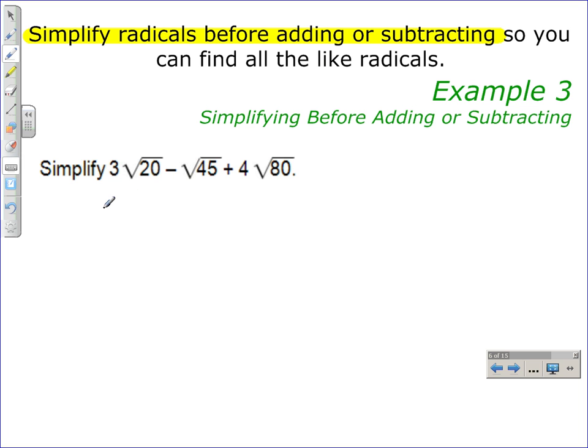If we think about the square root of 20, we want to think about factors of 20 that you can take the square root of. So I'm going to rewrite this as 3 times the square root of 4 times the square root of 5. I just rewrote 3√20 as 3 × √4 × √5, because I can take the square root of 4.